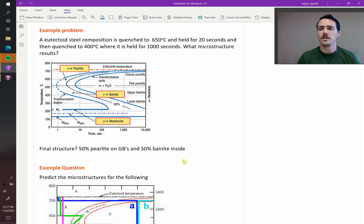Let's do some examples of using TTT diagrams to predict the microstructure of different steels when we quench it under different scenarios.